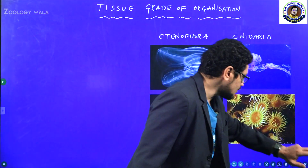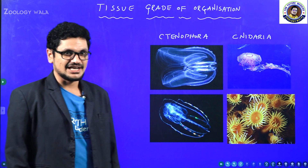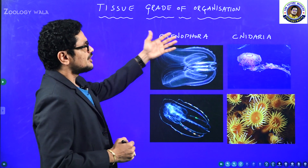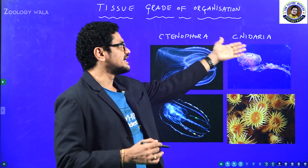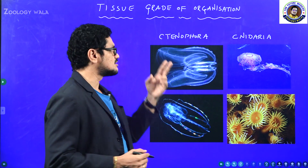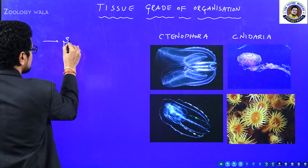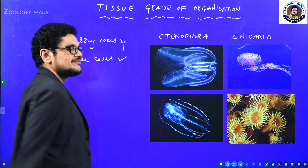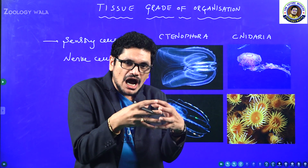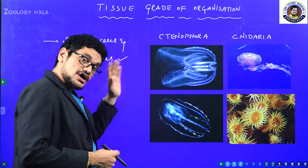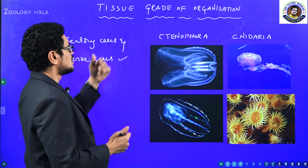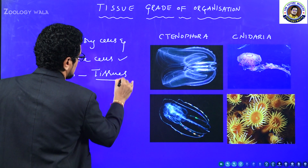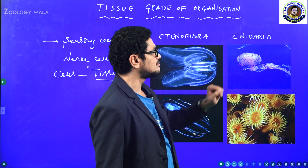That is all about the cellular level of organization. The next level is the tissue level of organization. The tissue level of organization is seen in ctenophores and cnidarians. In these two phyla, sensory cells and nerve cells are developed, so there is better coordination between different types of cells — which is not seen at the cellular level of organization. Here, cells combine to form tissues, which is why it is called the tissue level of organization.